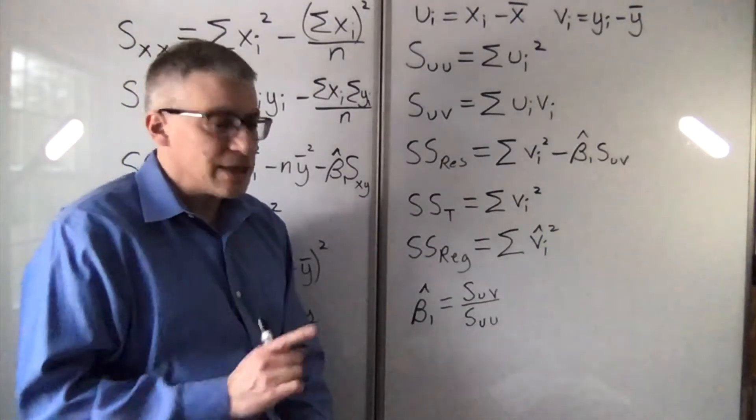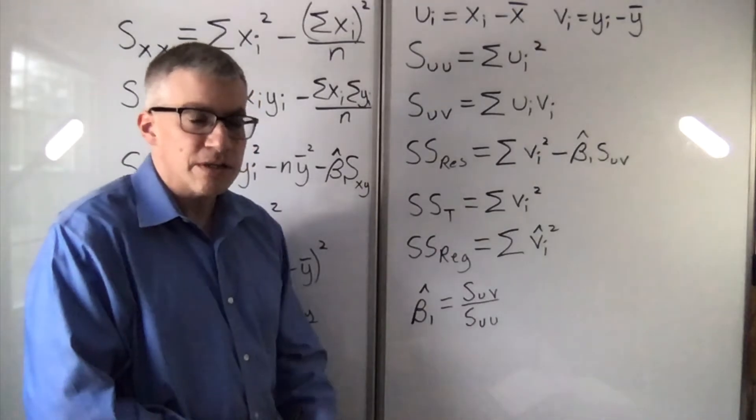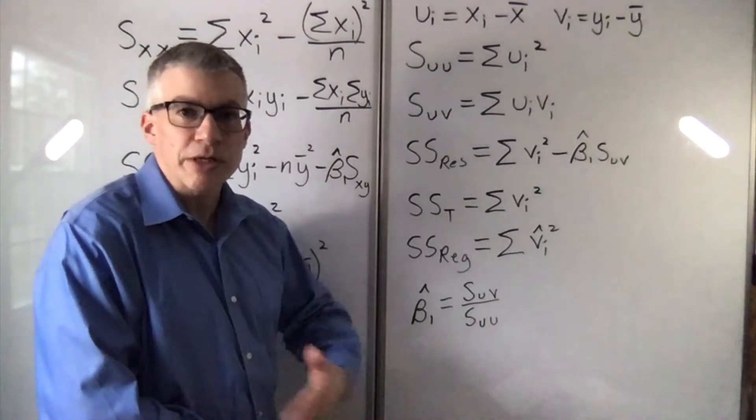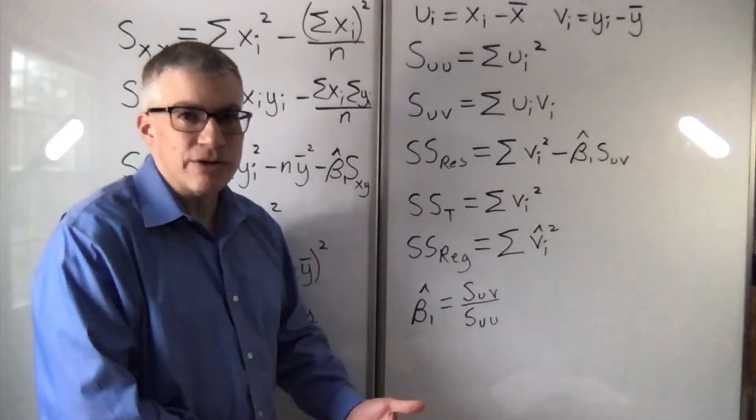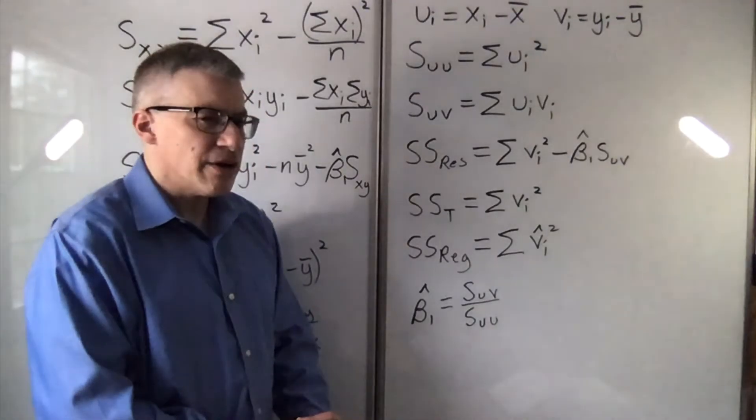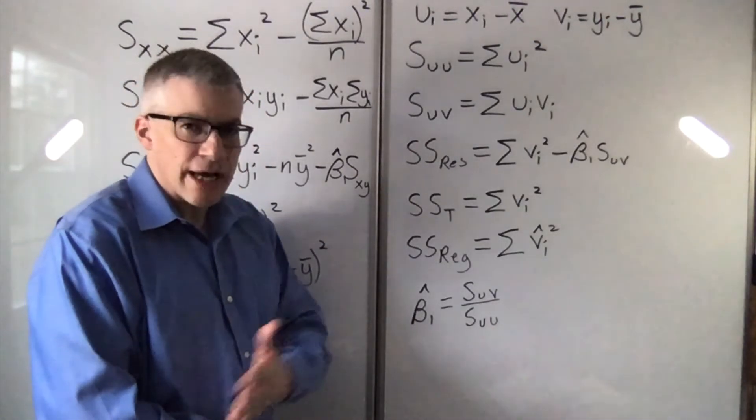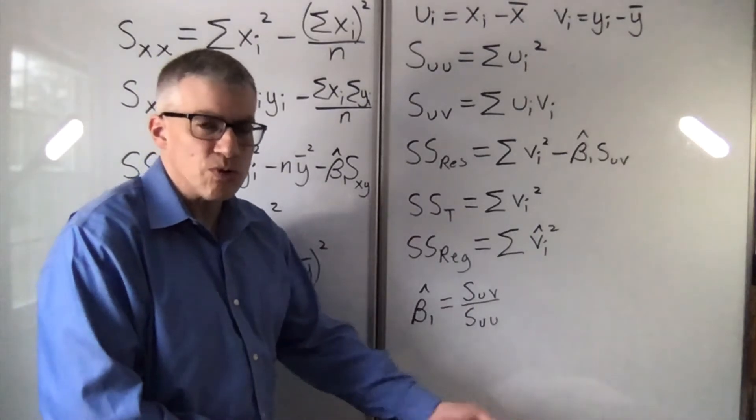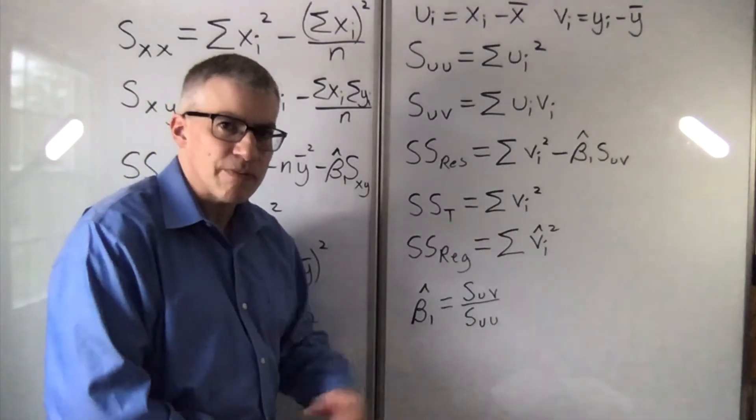Now, one reason not to do this that I can think of is, what if you have more than one sample and you're comparing them? You can't center it at the means of both. But even there, it seems as if you could have your x1s and your x2s and make them u1s and u2s, or something like that.